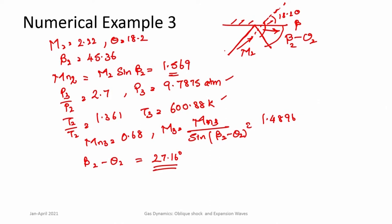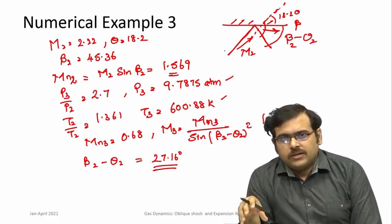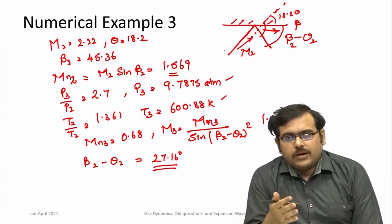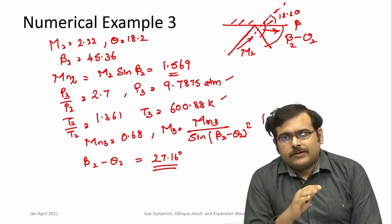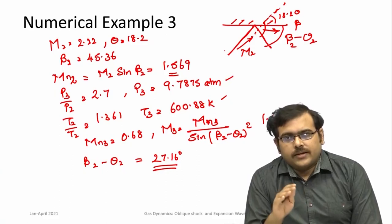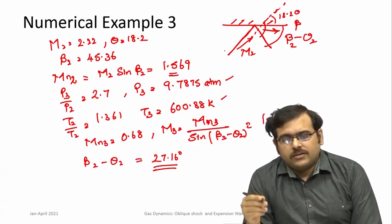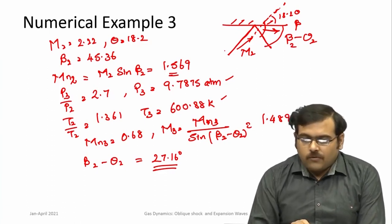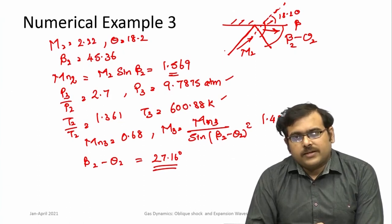The angle the reflected shock makes with the upper wall is beta2 − theta2 = 27.16°. We can see that Mach number keeps reducing and pressure and temperature keep increasing after each shock. Solving shock reflections requires applying oblique shock relations for each region — it is not like reflection of light where angle of incidence equals angle of reflection. After reflection, the flow becomes parallel to the wall.